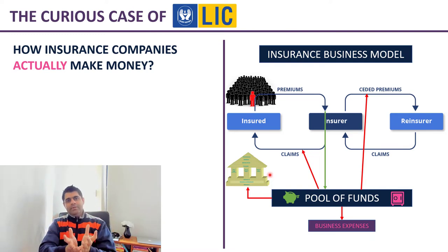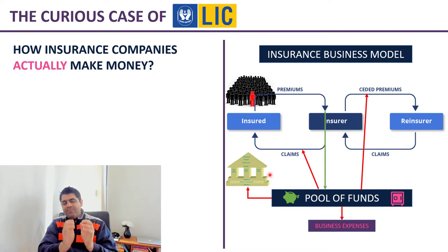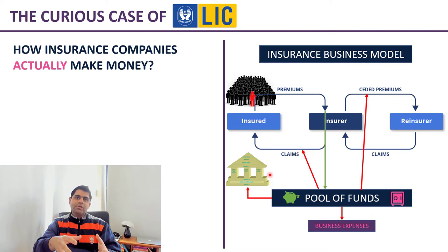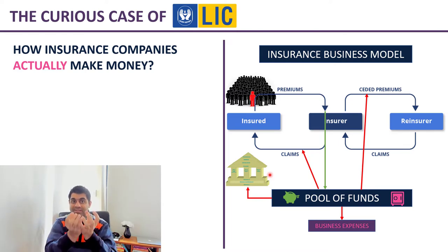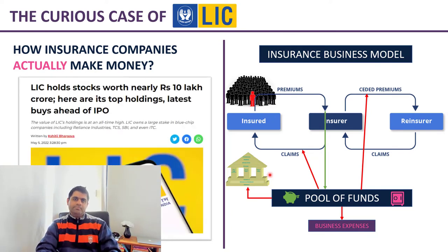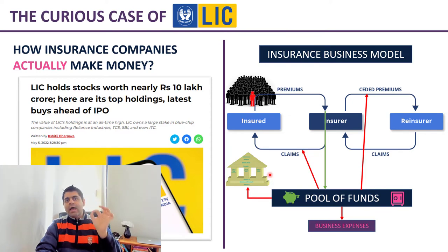So this in totality is how an insurance business works. After paying all these expenses, if there's still anything left, that is supposed to be the actual profit of an insurance company. Now, here begins the fun — and we are circling back to Life Insurance Corporation. Do you know that just before the IPO of LIC, it owned roughly 10 lakh crores worth of stocks in the listed companies of India?